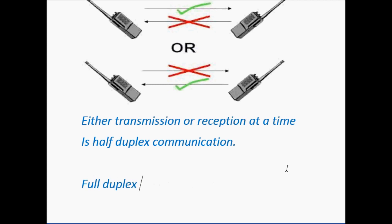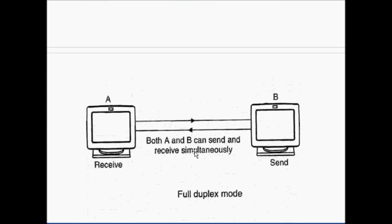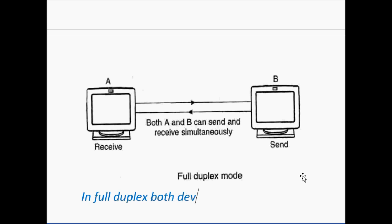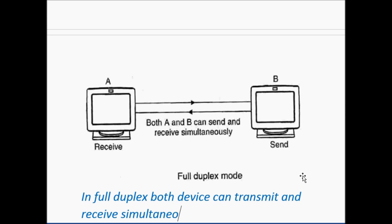Full duplex communication. In the full duplex communication system, suppose this is device A and this is device B. Device A is transmitting data and receiving data. Both A and B can send and receive data simultaneously. In full duplex, both devices can transmit and receive the data simultaneously.